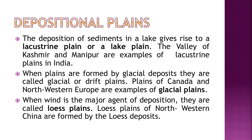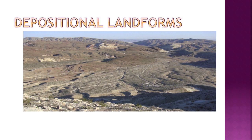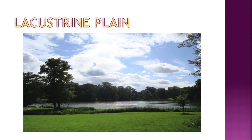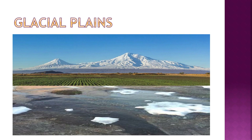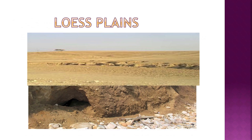Depositional plains are of various kinds. Deposition of sediments in a lake gives rise to a lacustrine or lake plain — the valleys of Kashmir and Manipur are examples in India. When formed by glacial deposits, they are called glacial or drift plains — plains of Canada and northwestern Europe are examples. When wind is the major agent of deposition, they are called loess plains — the loess plains of northwestern China are formed this way.